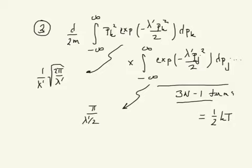And there will be 3n minus 1 of those terms, so it would be 3n minus 1 power, and this should be 1 half.